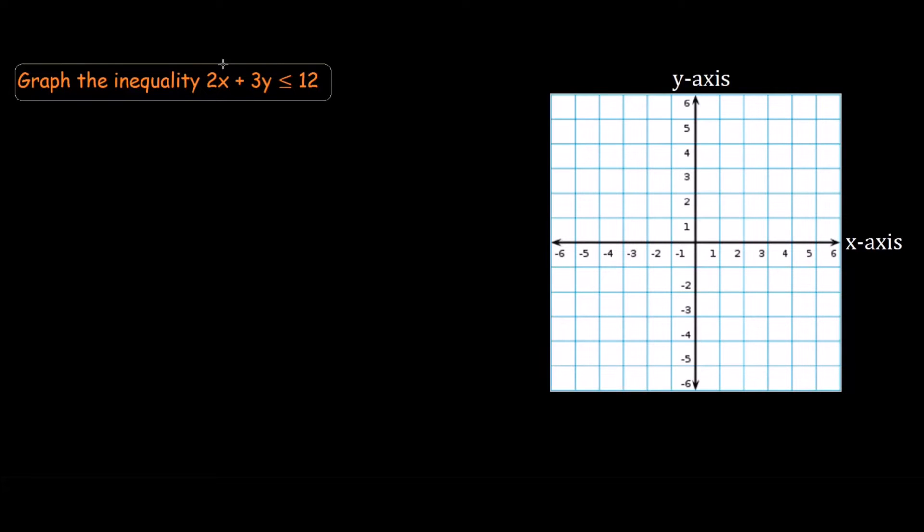The first step to solving this problem is to graph the line 2x plus 3y equals 12 onto this grid, and then we'll determine which side we should highlight.